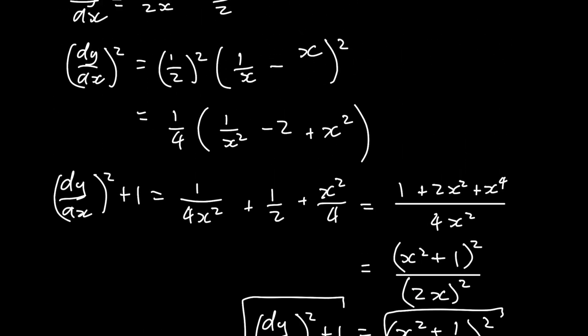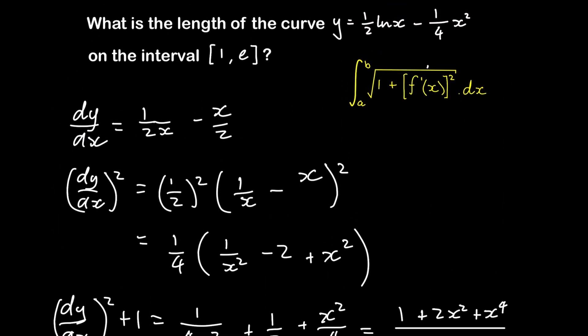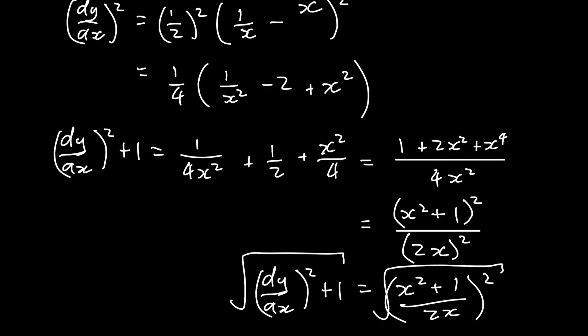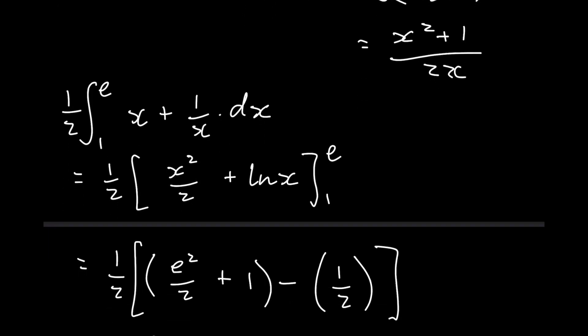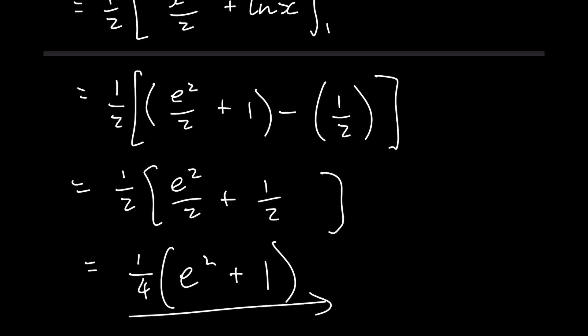So the answer to: what is the length of the curve y = (1/2)ln(x) − (1/4)x² on the interval from 1 to e, is 1 over 4 times (e² + 1). If you did enjoy this video and found it useful, please don't forget to leave a like and subscribe. Thank you.